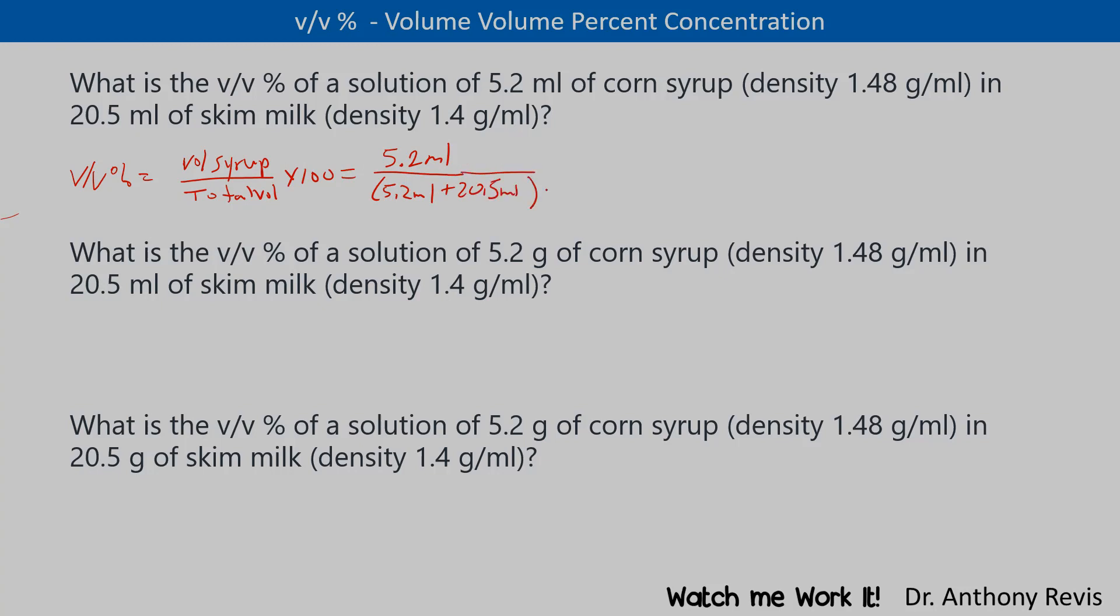So everything is already in volume. We punch the numbers through and we get 20 percent. We put the point in to emphasize that it's two sig figs here, or you can put 20 with a bar over it and say 20 percent. So that would be an example of a volume-volume percent for a problem like this.